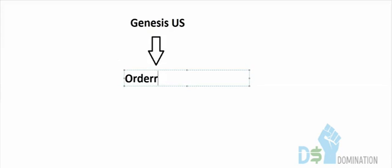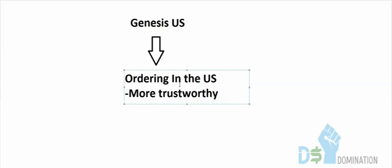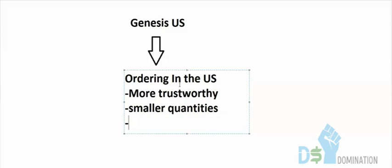There are several advantages to ordering in the US — obviously it's more trustworthy. Disadvantages include smaller quantities in general and not as great a price break, but that's kind of offset by shipping costs from China. You might pay more on US sites and there's not as much variety. We've made a lot of money using both US sites and Chinese suppliers.